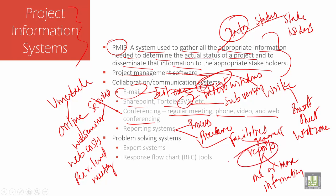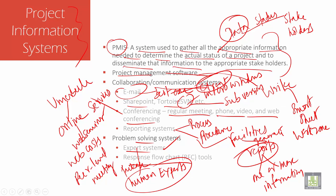Problem solving systems include expert systems and response flow charts. An expert system is a package that holds a body of knowledge and a set of rules on a subject — it can be gained from human experts. It is used to make decisions by asking questions, then evaluating based on the user's answers and the knowledge it holds.